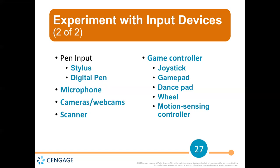There's also a series of different game controllers — a joystick, gamepad, dance pad for Dance Dance Revolution, some type of wheel, and motion sensing controllers. There's even something like a photo cell — if you wave your hand in front of it, it creates an input. So those are all input devices. Think through where you'd use them and what you use them for.